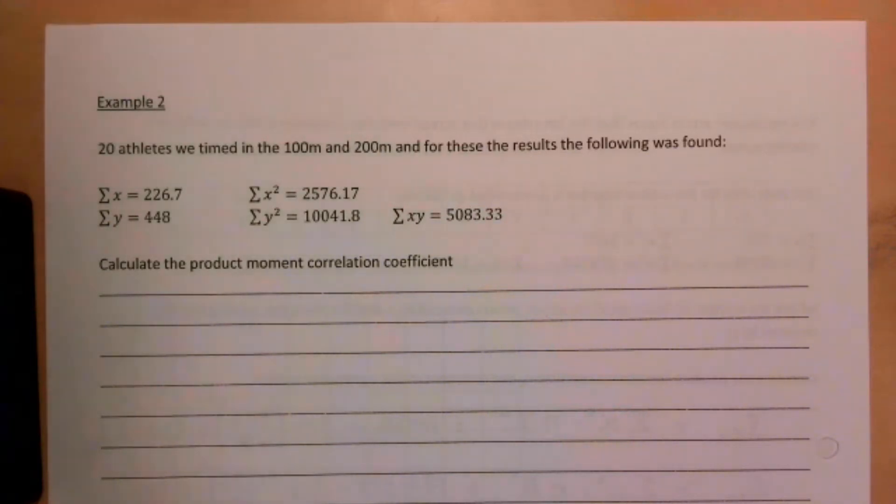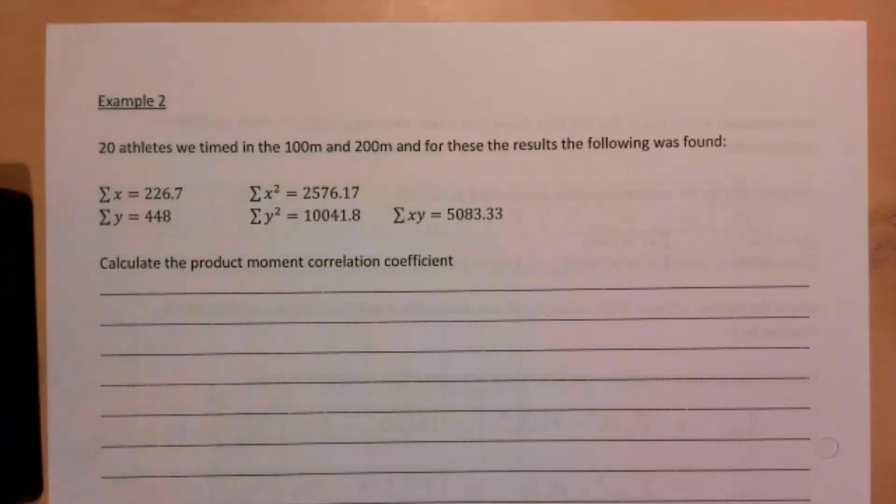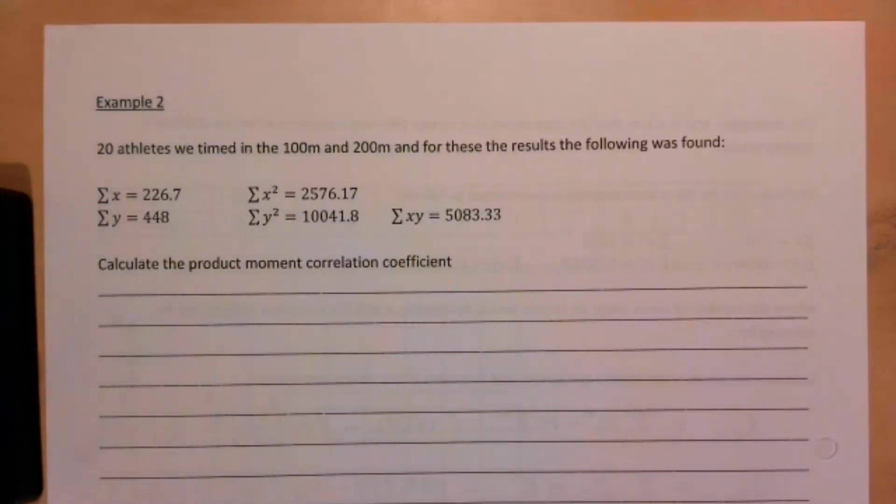This is AS stats, we are on unit 3 and this is 3.2 the product moment correlation coefficient. We're looking at example 2. This example says 20 athletes were timed in the 100 meters and 200 meters, and for these results the following was found. These are our summary stats that we're going to use.